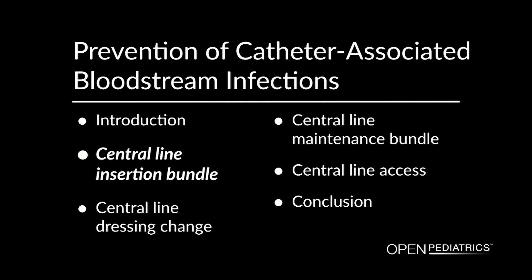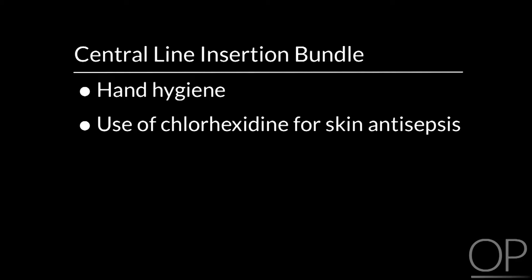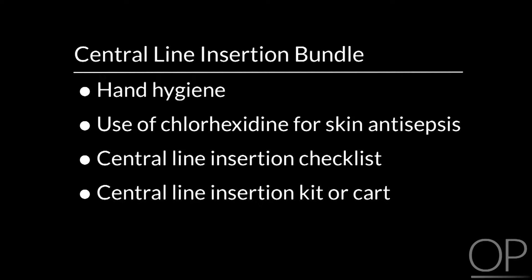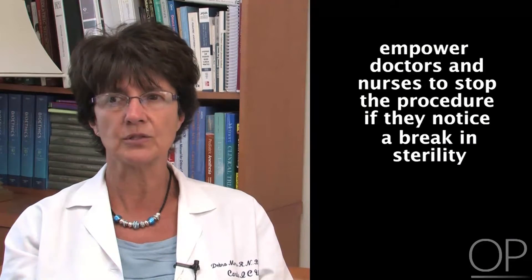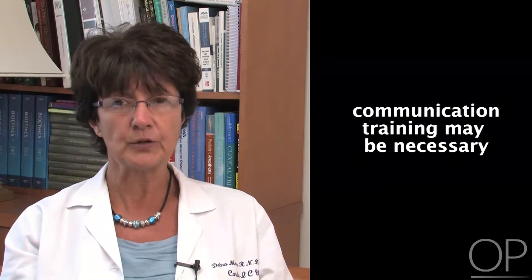The central line insertion bundle includes hand hygiene, which is the basis of all infection prevention initiatives, the use of chlorhexidine for skin antisepsis, a central line insertion checklist, a central line insertion kit or cart, and the use of maximal sterile barriers. The final bundle component is to empower doctors and nurses to stop the procedure if they notice a break in sterility. Communication training may be necessary so that doctors and nurses are comfortable intervening, and their observation should be acknowledged by the practitioner with the procedure halted until the issue is corrected.